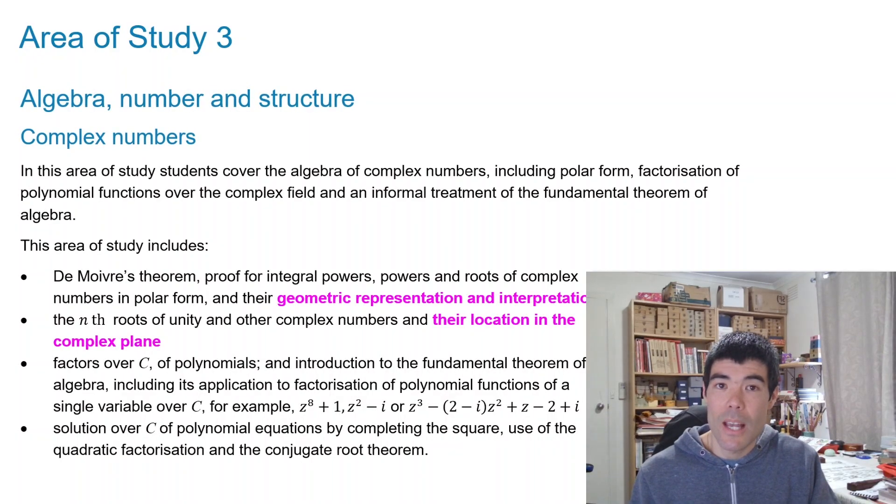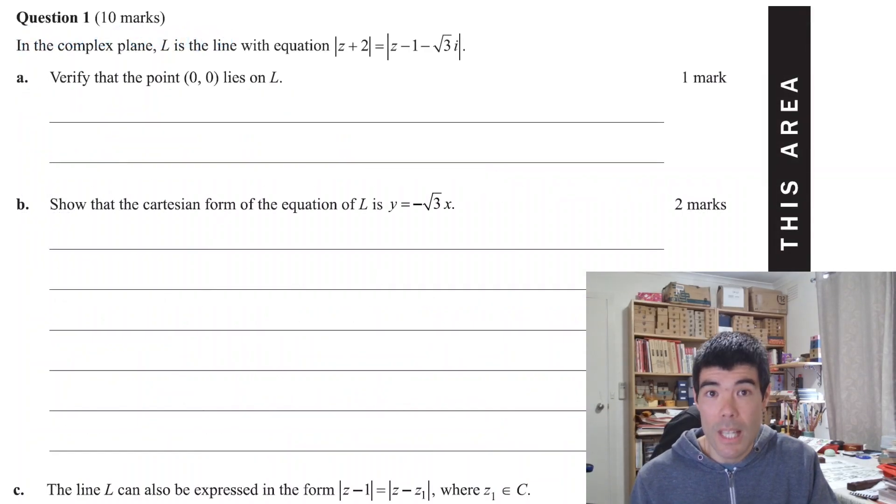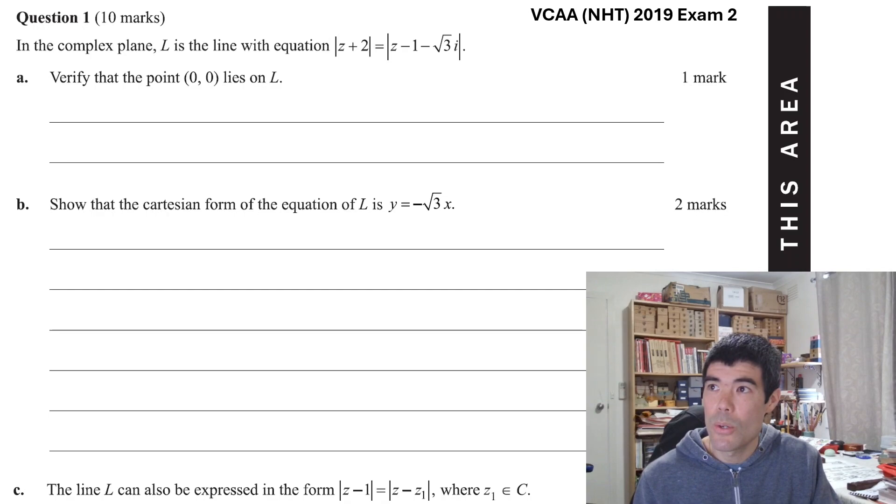The key skills I would say on exam 2 that are assessed a lot are geometric representation and location in the complex plane. So we'll have a look at an example of an extended response question and there is always one extended response question on complex numbers. This one is from the 2019 NHT exam 2. It's quite a standard example of a complex numbers extended response and then we'll have a look at some more challenging multi-choice questions after this.